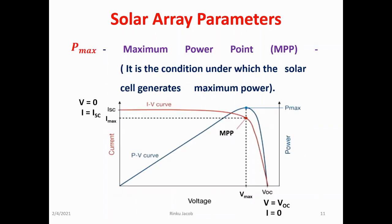The third parameter is the maximum power point or MPP, denoted as Pmax. This relates to the point where the power supplied by the array that is connected to the load, that is batteries or inverters, is at its maximum value, where MPP equals IMP multiplied by VMP. The maximum power point of a photovoltaic array is measured in watts or peak watts.